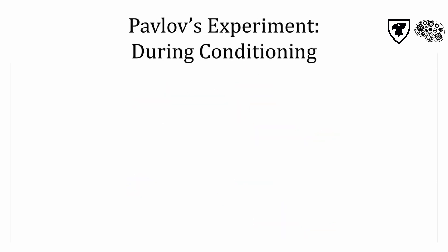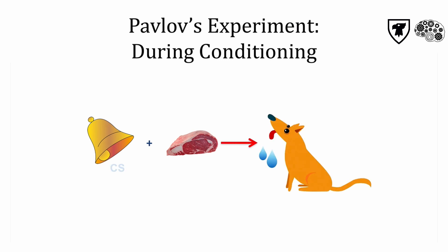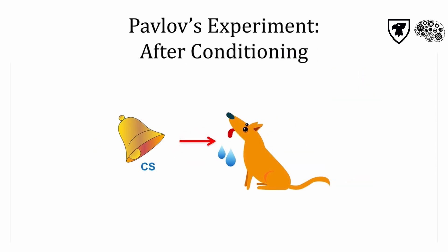During conditioning, the neutral stimulus is presented just before the US, and as expected, the dog salivates, just as it did when the US was presented alone. If this pairing is repeated enough times, the dog will now salivate when hearing the bell alone — so it has become a conditioned stimulus, or CS — and the dog's response to this new learned cue is called the conditioned response, or CR.